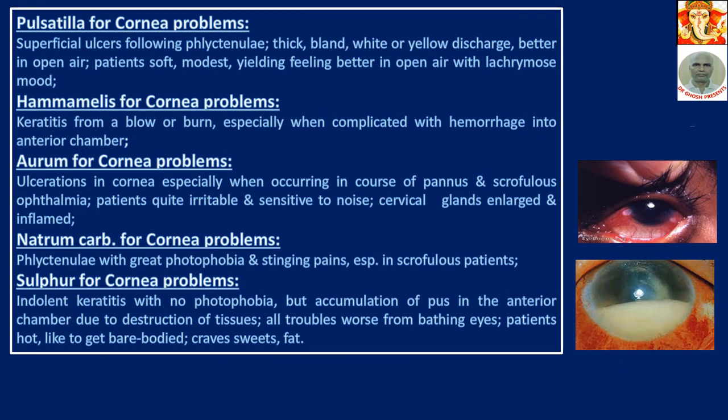Pulsatilla for cornea problems: superficial ulcer following phlyctenule — a nodular inflammation over the sclera and cornea — with thick, bland, white-yellow discharge. Better in open air. The Pulsatilla patient is soft, modest, and yielding, feeling better in open air, with a lachrymose mood.